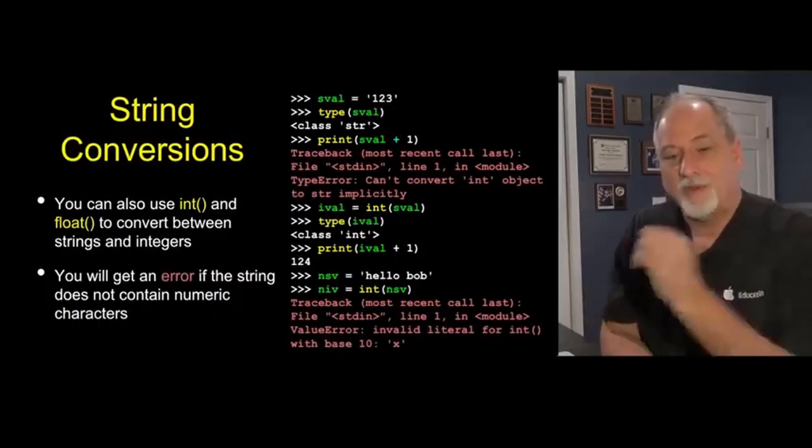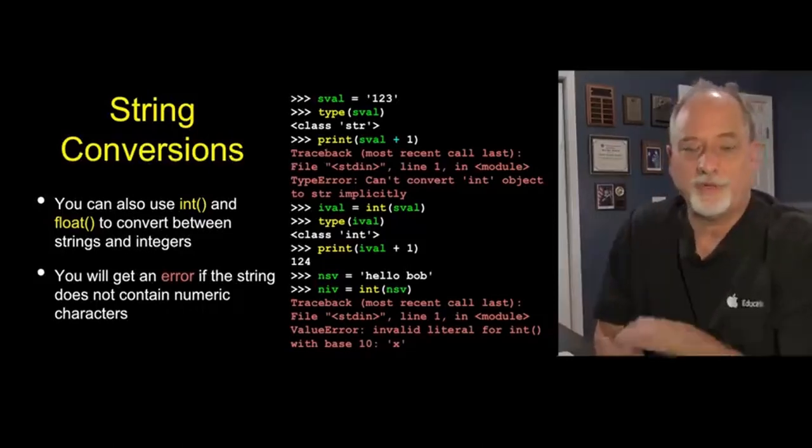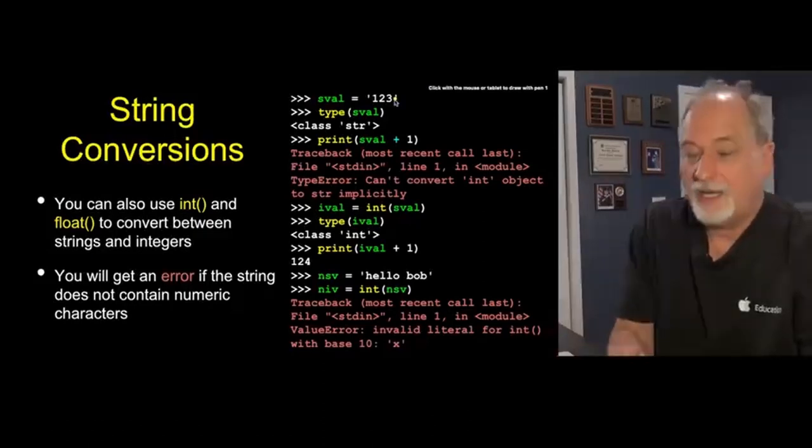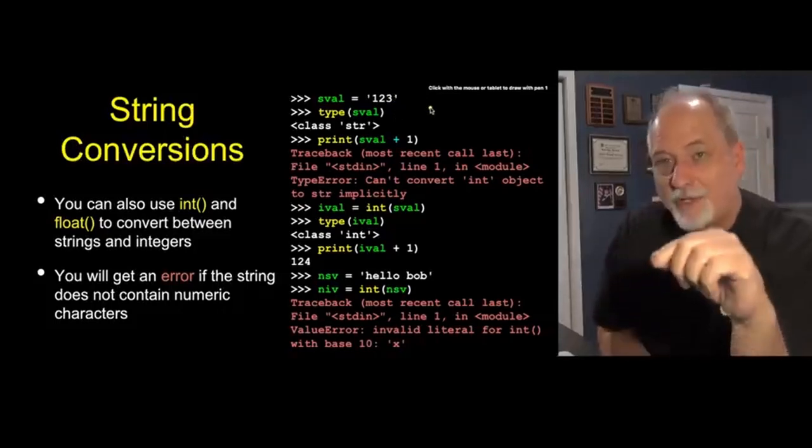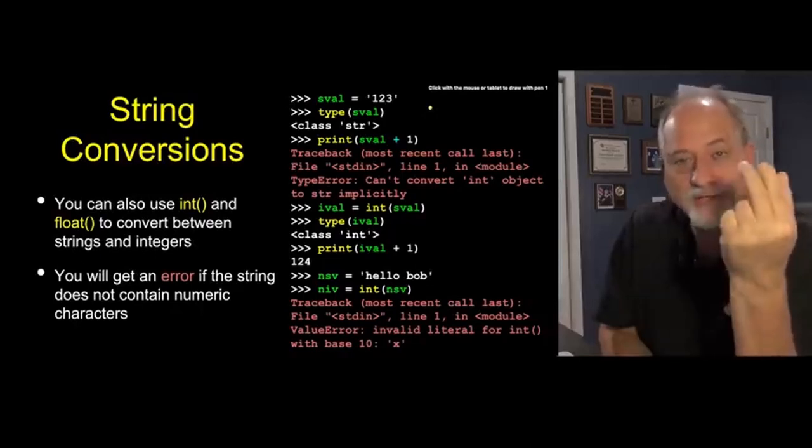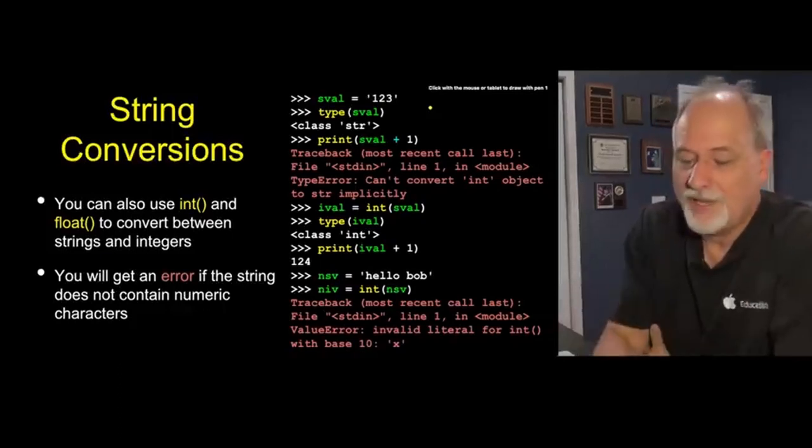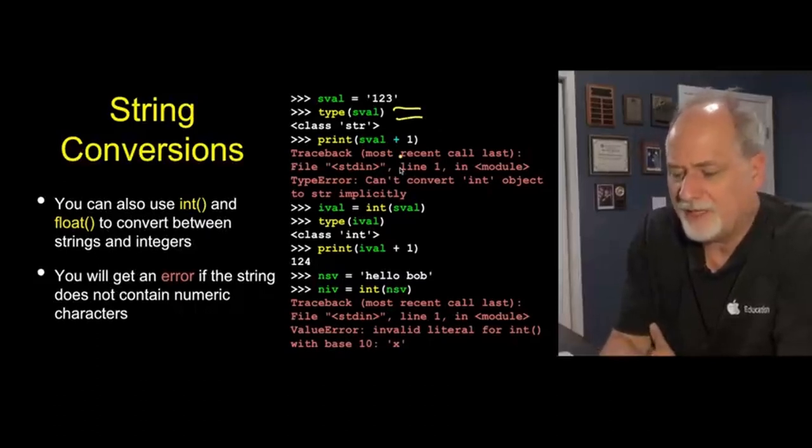So we've been talking about converting from integer to floating point, but you can also convert from string to integer or string to floating point. So here we start out with a little string value. It only works for strings that are made of digits. So, quote one, two, three, quote is not an integer. It is a three character string that has one, two, three as the characters in that string, which is very different than 123. We say, what is the type of this? It's a string. We say, let's add one to it. And it says, can't convert int to string, so that blows up, right?